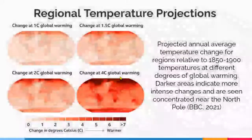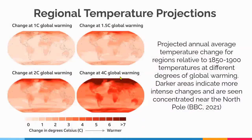By zooming in to look at how global warming is affecting specific regions, we see that areas near the Arctic and at high latitudes are warming much faster than areas near the equator. The Arctic is warming twice as fast as the global average, and projections show this trend will continue.